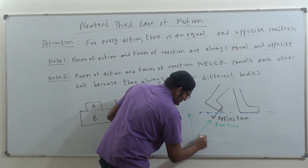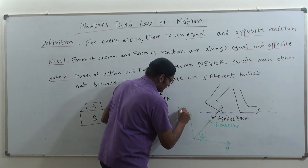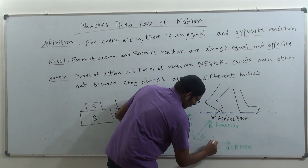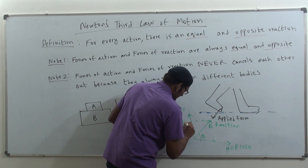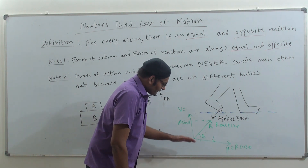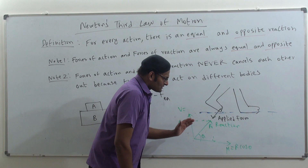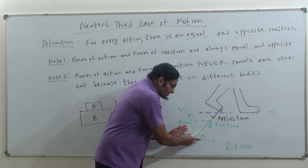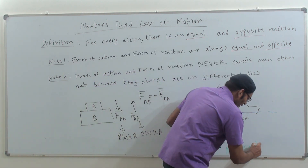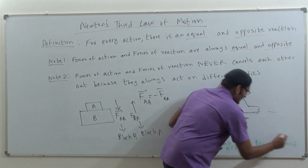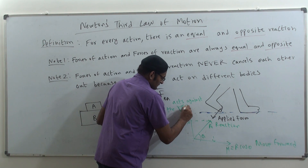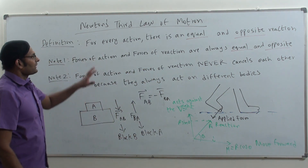The reaction force R can be resolved into two components. If the force makes an angle theta with the horizontal, then the horizontal component is R cos theta and the vertical component is R sine theta. I apply a force making angle theta with the horizontal, and the ground exerts reaction force R. The horizontal component R cos theta helps me to move forward, and the vertical component R sine theta acts against my weight. This is the basic application of Newton's third law of motion.